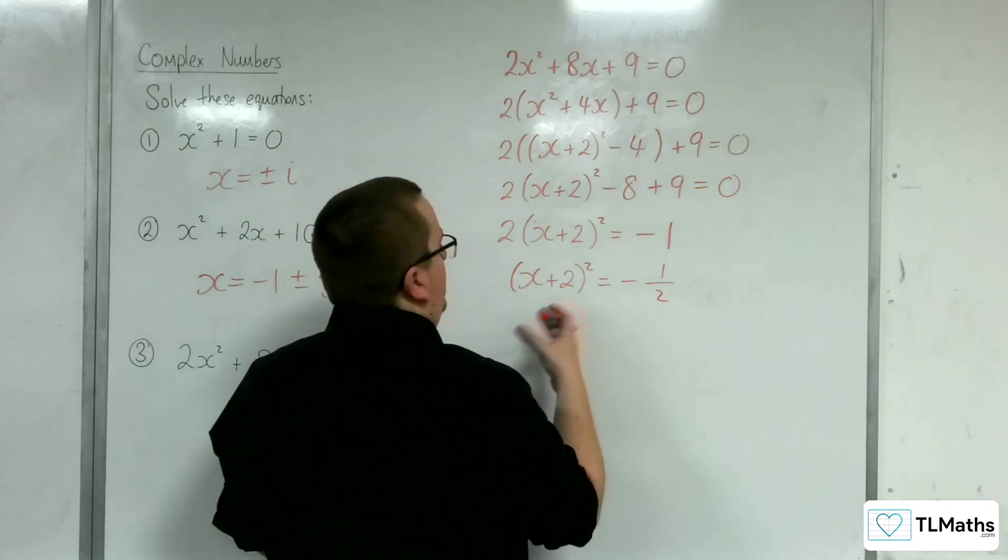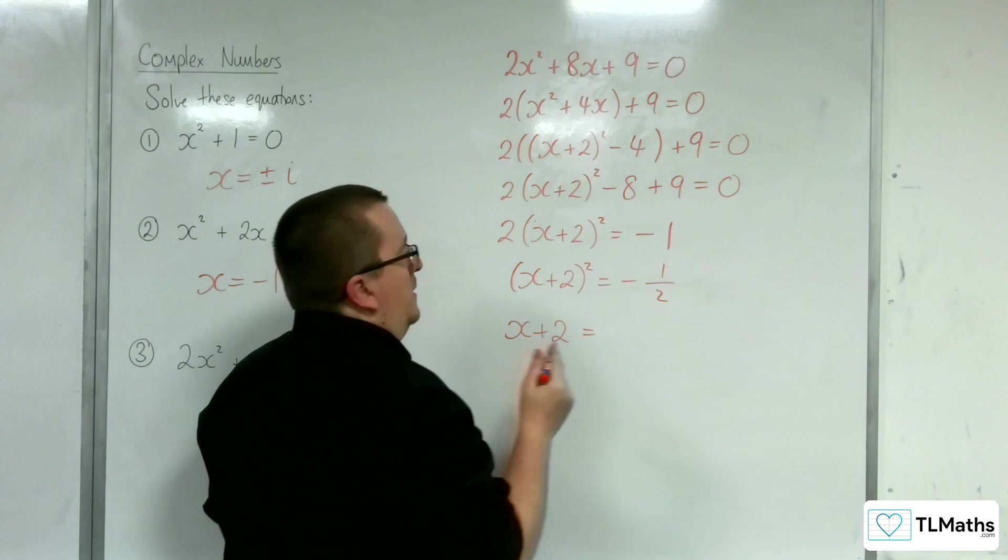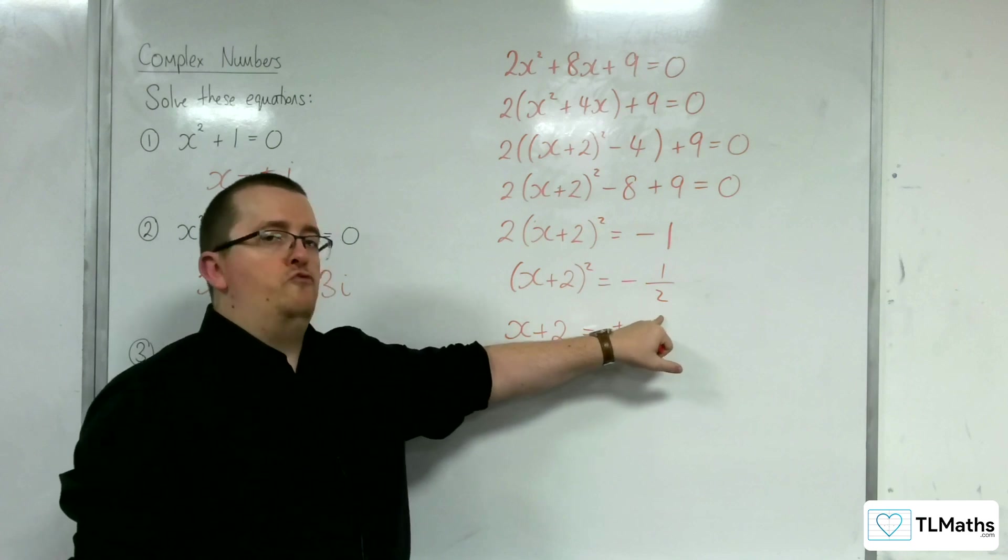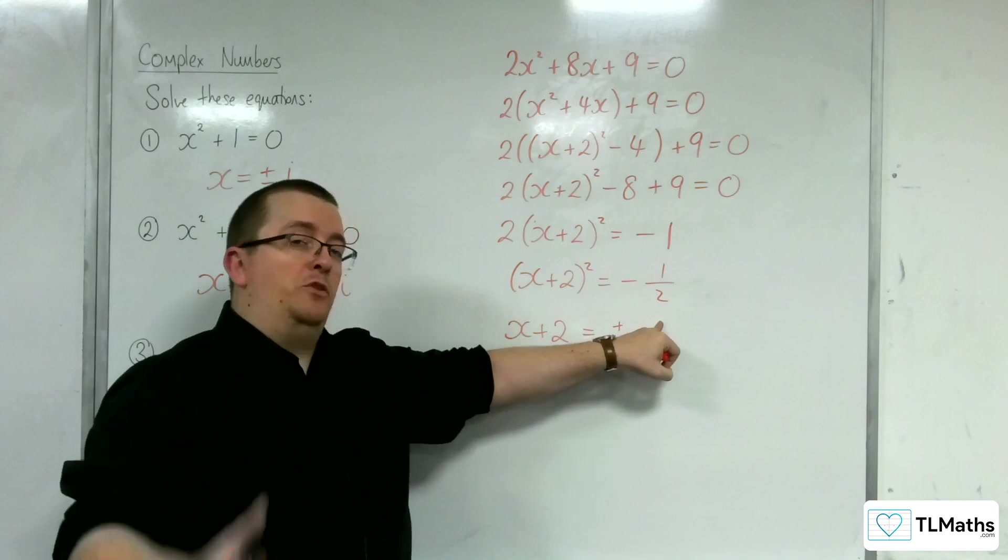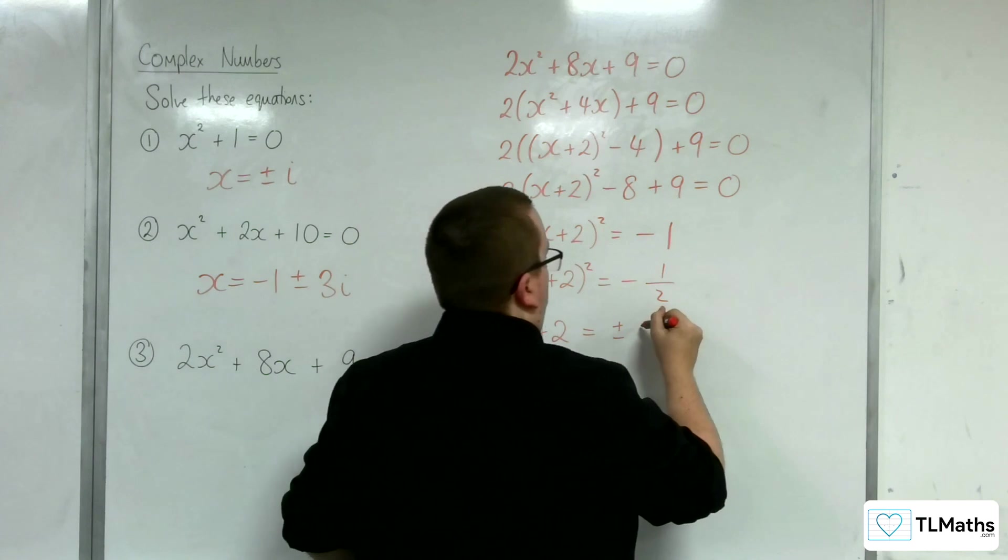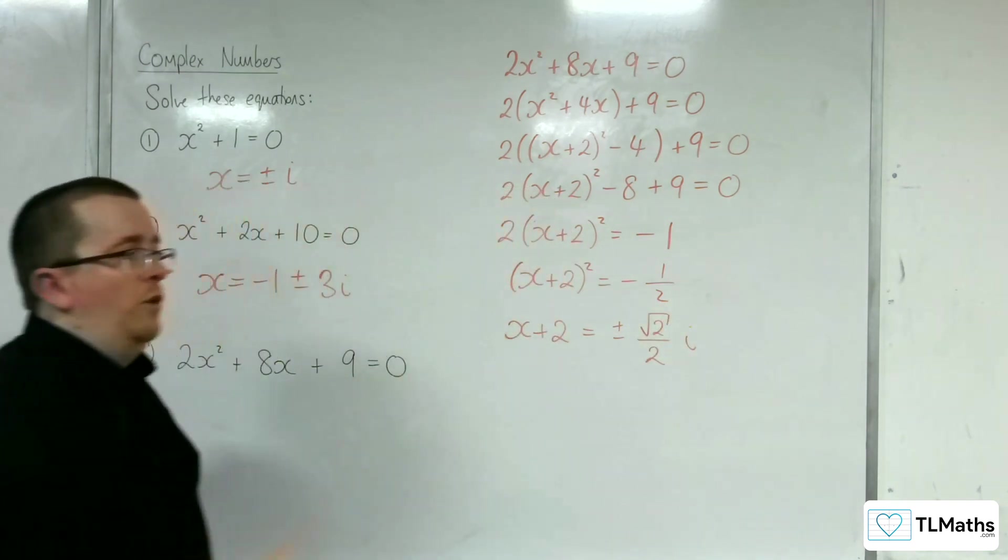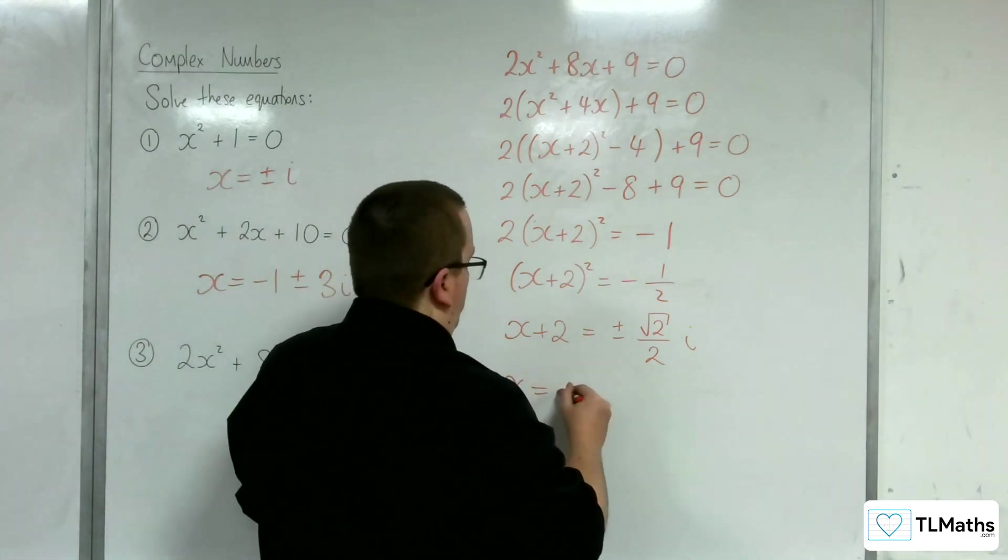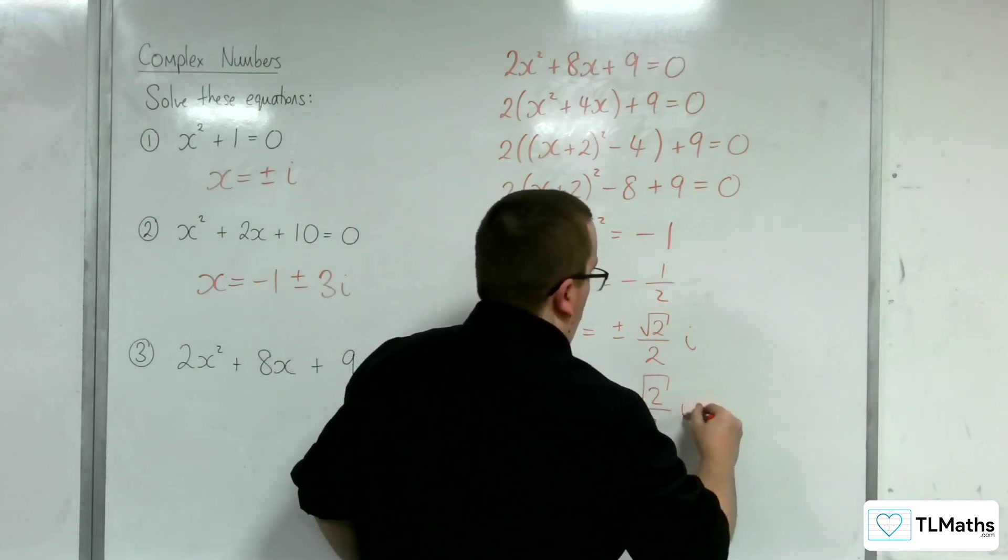So, now I need to square root both sides. So, I've got x plus 2 is equal to plus or minus. Now, the square root of a half is 1 over root 2. 1 over root 2, you can rationalise the denominator, multiplying it top and bottom by root 2, to get root 2 over 2. So, we'd have plus or minus root 2 over 2i, because we've got the minus sign there. And then subtracting 2 from both sides, we've got minus 2 plus or minus the square root of 2 over 2i.